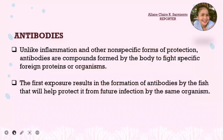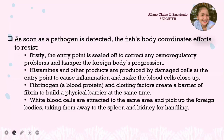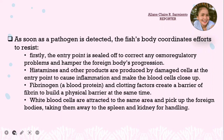Unlike inflammation and other non-specific forms of protection, antibodies are compounds formed by the body to fight specific foreign proteins or organisms. As soon as a pathogen is detected, the fish body coordinates efforts to resist. Firstly, the entry point is sealed off to correct osmoregulatory problems and hamper the foreign body's progression. Histamines and other products are produced by damaged cells at the entry point to cause inflammation and make the blood cells close up. Fibrinogen, a blood protein, and clotting factors create a barrier of fibrin as a physical barrier. White blood cells are attracted to the same area and take foreign bodies away to the spleen and kidney for handling.